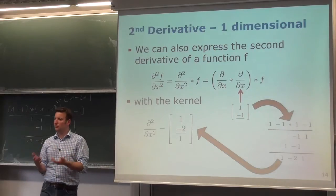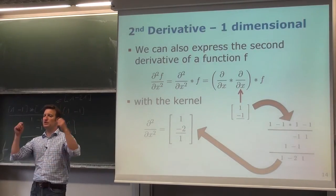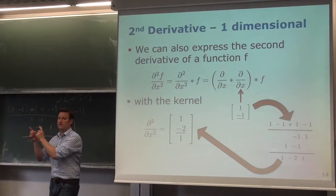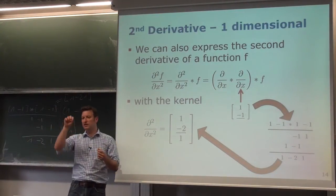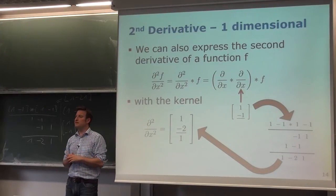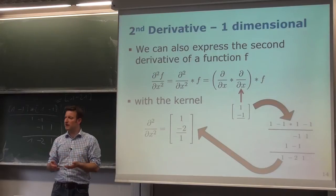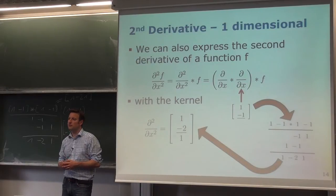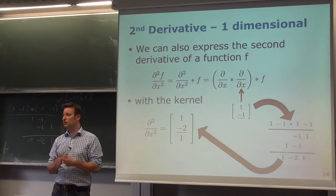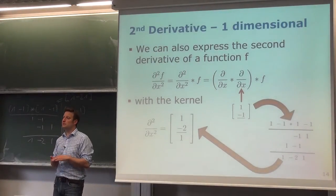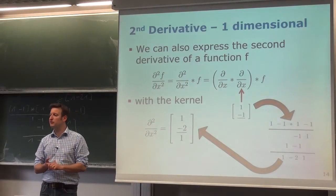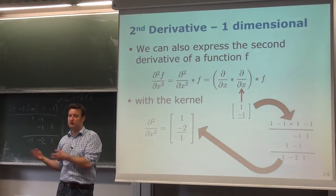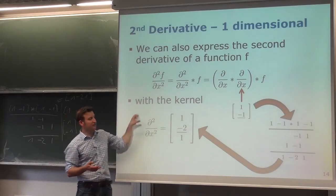To recap: computing the first derivative means subtracting intensity values at two neighboring pixel locations. Given a fixed pixel size, this is an approximation of the gradient of a continuous function. Expressing this as a kernel and convolving with the input image gives us the first derivative. Applying the same idea again — taking the derivative of the first derivative — gives us the second derivative.